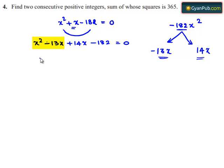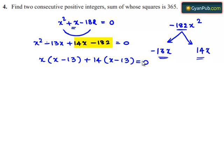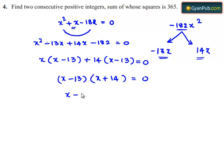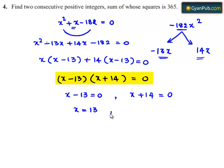Taking common from the first and second terms, we get x minus 13, and plus 14 can be taken common from the third and fourth terms, giving x minus 13 equals 0. So x minus 13 is taken common, and the remaining terms give x plus 14 equals 0. We can write x minus 13 equals 0 or x plus 14 equals 0, giving x equals 13 or x equals minus 14.